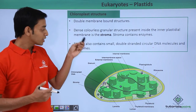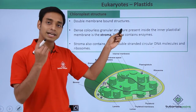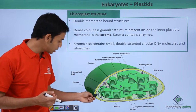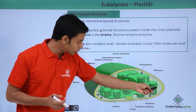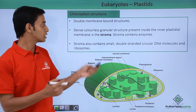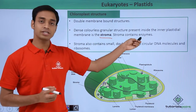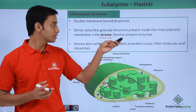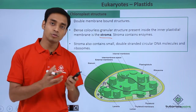The chloroplast has a dense, colorless granular structure inside it, which is known as the stroma. As you can see here, this colorless portion contains a lot of granular structures. The stroma contains specific important enzymes responsible for the process of photosynthesis — trapping energy and making food materials for the plant cells.